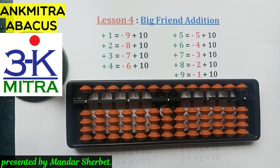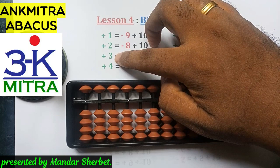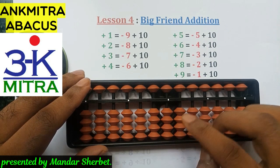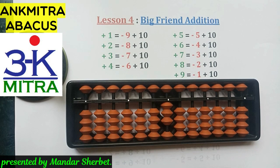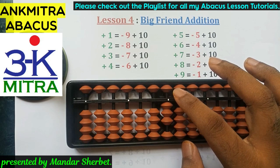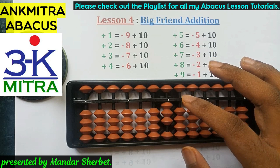Let's look at examples. Suppose we are adding the digit three repeatedly — three plus three plus three and so on. We start with zero on the abacus. The first three we add directly — three beads are available, no problem. For the second time we add three, we don't have enough beads. We check whether the bead of five is available — in this case it is — so we can add three using its small friend formula, which we saw in lesson number two.